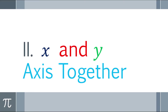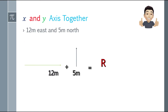Alright, so next topic: x and y axis together. For the first example, we have 12 meters east and 5 meters north. You'll notice the 12 meters and the 5 meters north — they're not in the same direction. We need to find our resultant.